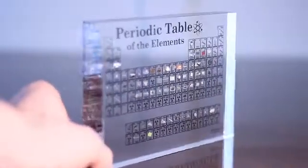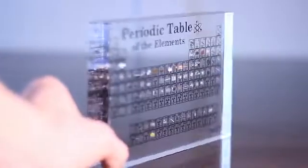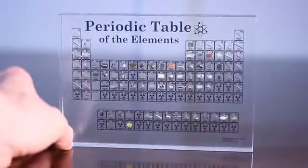Other elements that we couldn't include in the original tables are now included in this new edition, like pure europium metal, mercury, and radium.